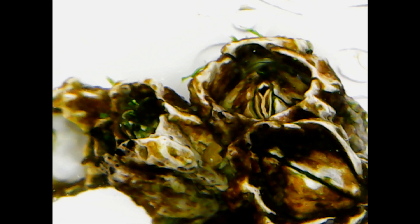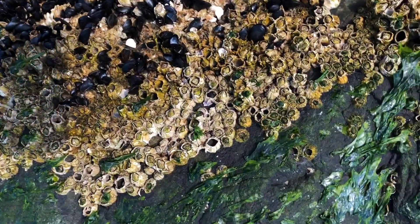When a baby barnacle finds a nice spot, it attaches itself to a rock or another surface, head down with brown glue. That's right, it glues its head to the floor.